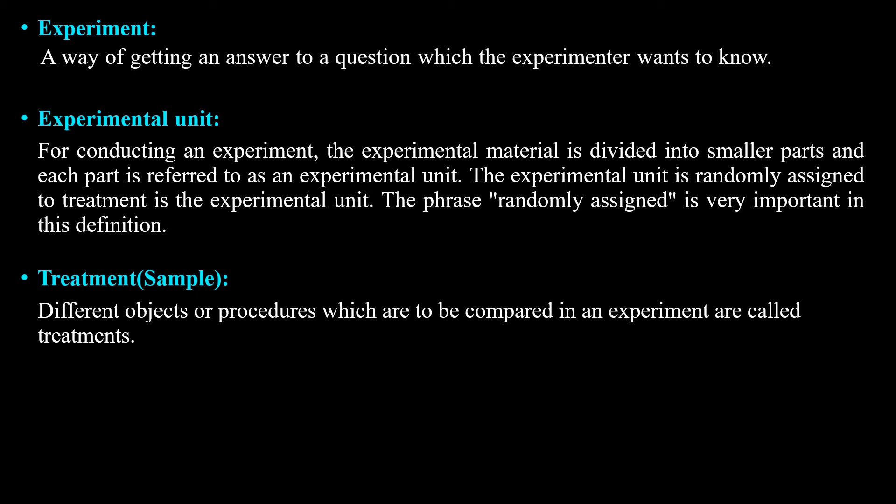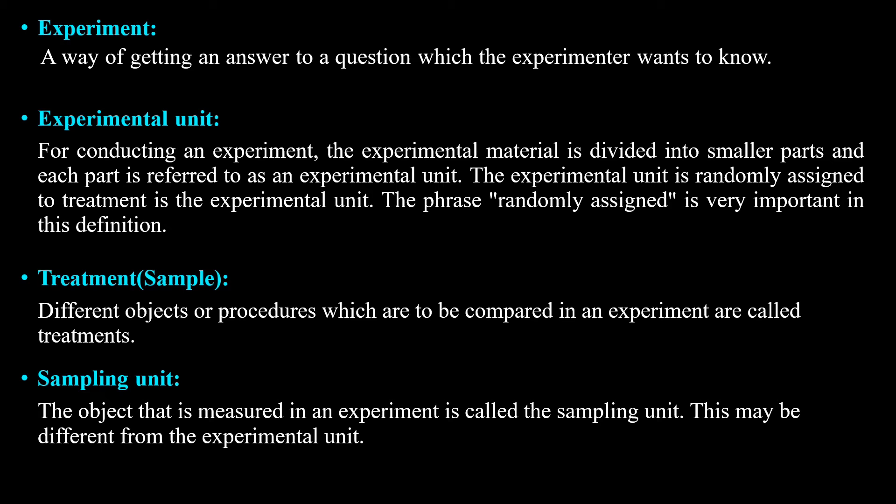Treatment — in other words, it is called a sample. Different objects, products, or procedures which are to be compared in an experiment are called treatments or samples. Sampling unit: the object that is measured in an experiment is called the sampling unit. The experimental unit and the sampling unit are different — they are not the same. The experimental unit is the material divided into smaller parts, while the sampling unit is the specific object being measured.